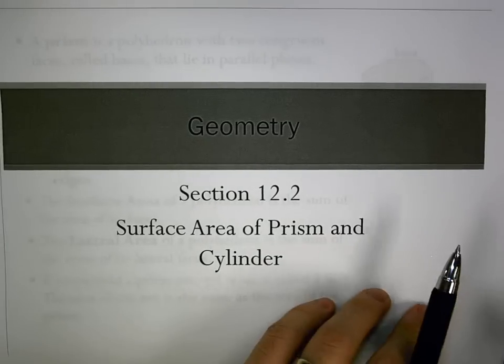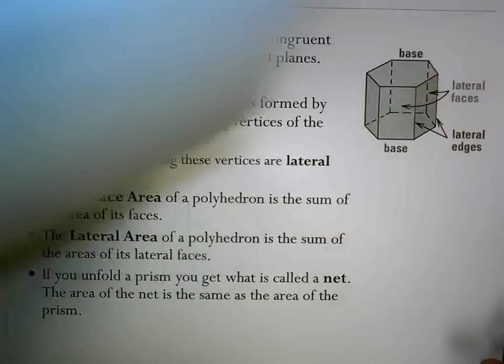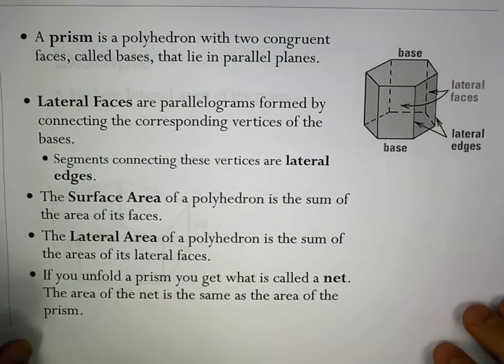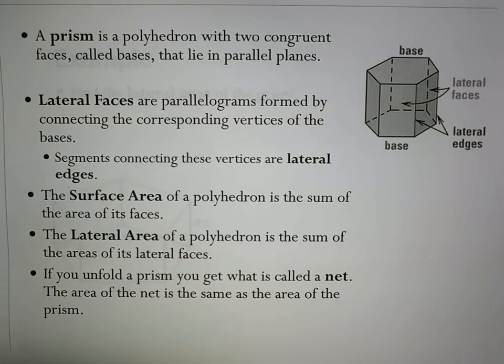This section is looking at section 12.2, which is the surface area of prisms and cylinders. Starting with defining a prism, it is a polyhedron with two congruent faces called bases that lie in parallel planes.